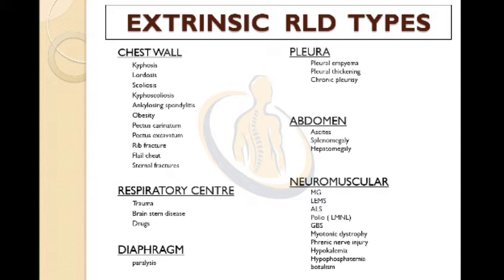Abdomen causes include ascites, splenomegaly, and hepatomegaly. Neuromuscular disorders include myasthenia gravis, LEMS, ALS, polio — generally lower motor neuron type — GBS, myotonic dystrophy, phrenic nerve injury, hypokalemia, hypophosphatemia, and botulism.